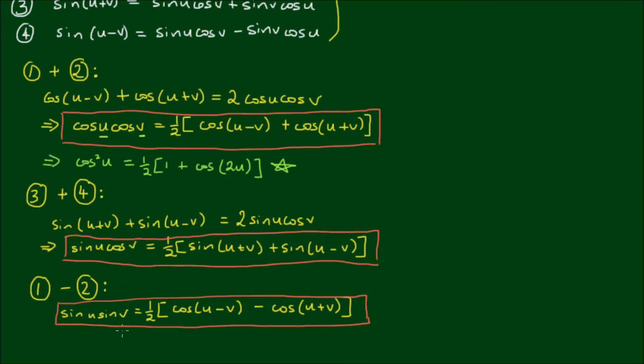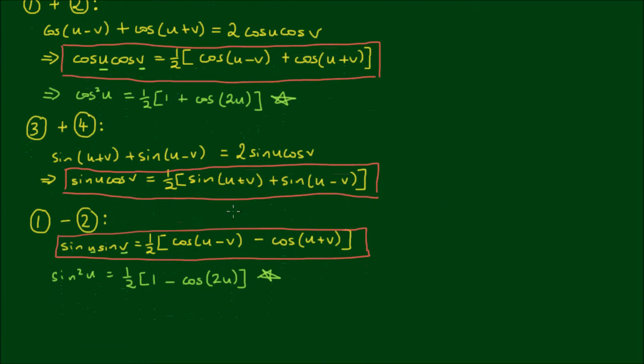And again, if we make u and v equal, we have sin²(u) is equal to 1/2 of [1 minus cos(2u)]. And this of course is the other half-angle formulae for sin², also known as the power-reducing formulae. And finally,